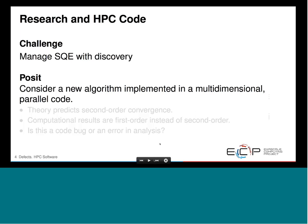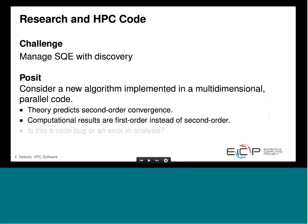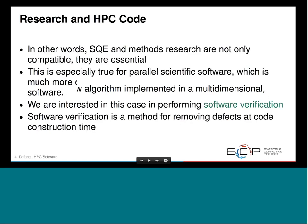So I want to implement some new algorithm. I do due diligence, work through the mathematics and algorithms carefully, and my theory predicts second-order convergence. I do my computational results and they come out first-order instead. Now I have to ask: is this a code bug, or is it an error in my analysis?